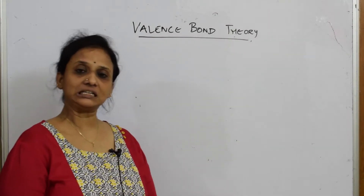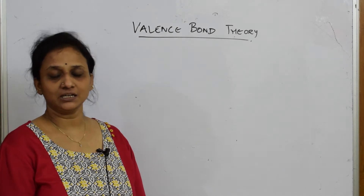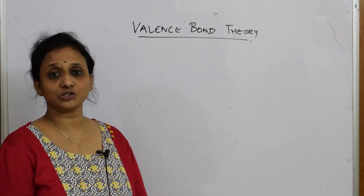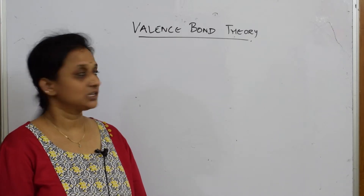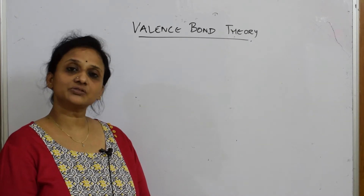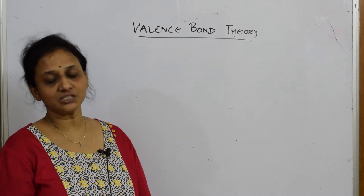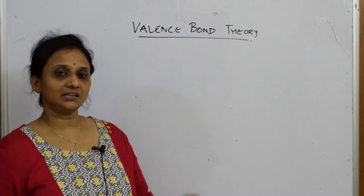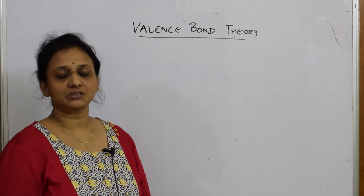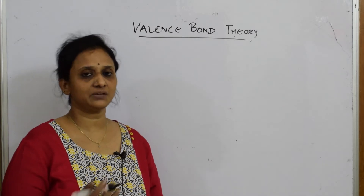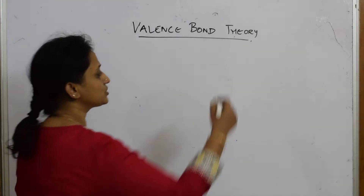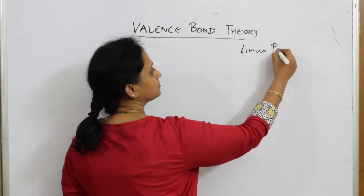Let us come back. We have learned about crystal field splitting or crystal field theory, and we studied how it splits in octahedral and tetrahedral complexes. Now let us study valence bond theory — a very important topic of this chapter, as it covers different types of hybridizations. Either they may give you the isomerism part, or CFT or VBT, or one mark for nomenclature. Valence bond theory was introduced by Linus Pauling.